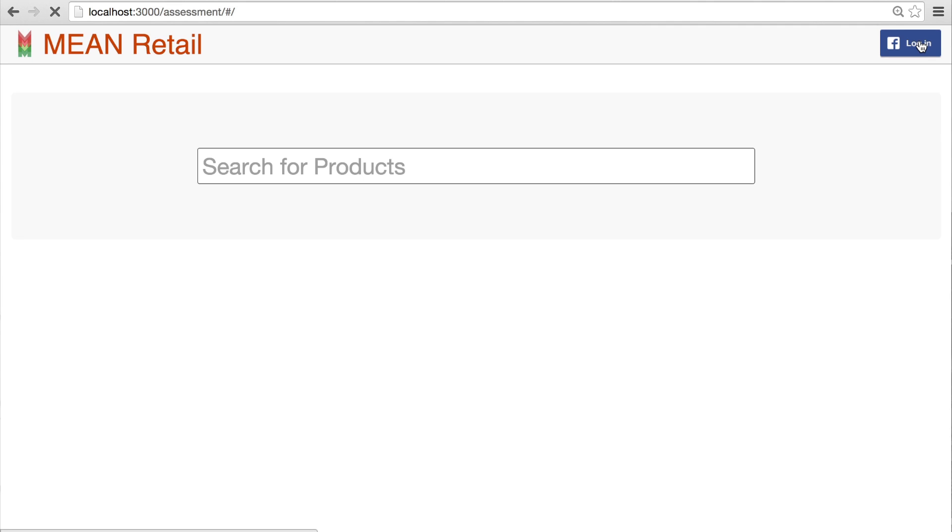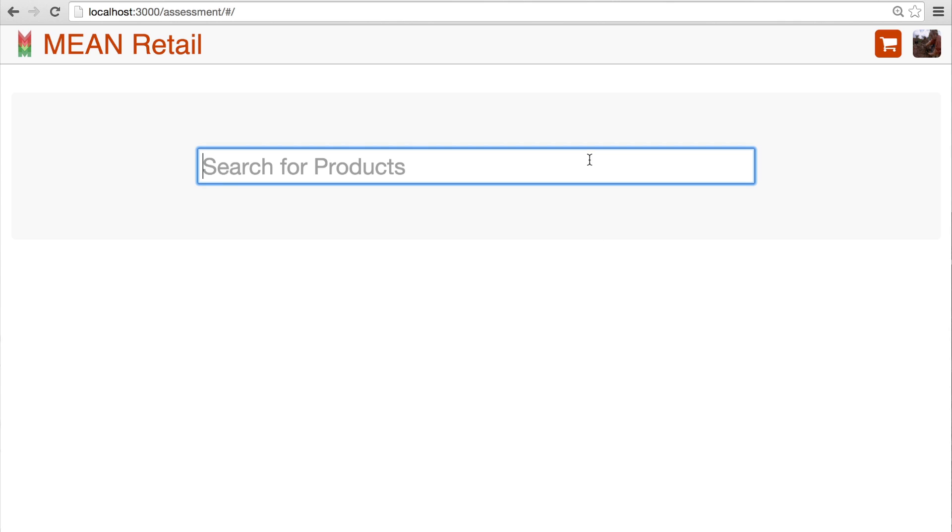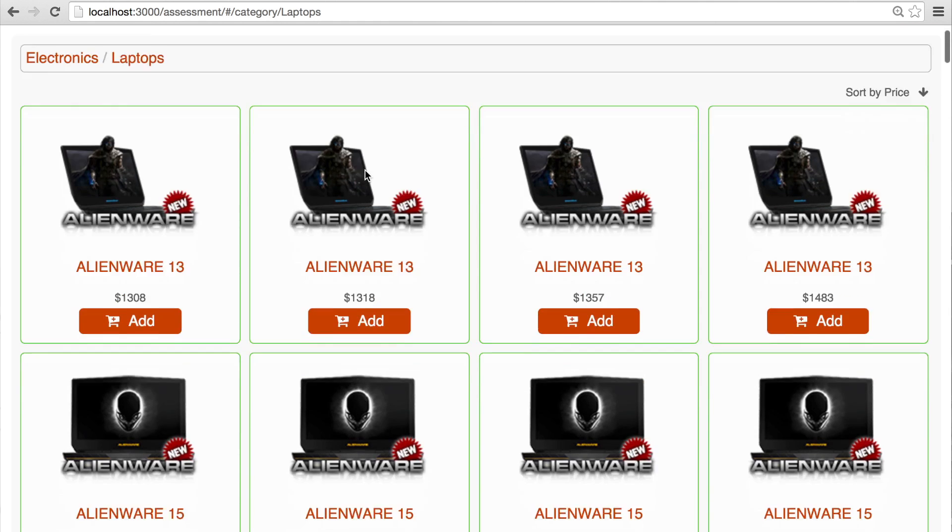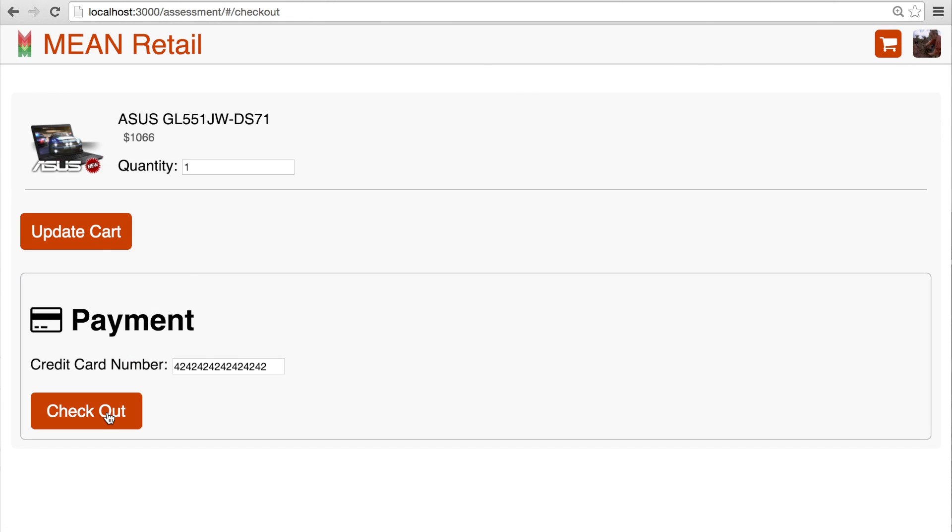The app will look something like this. As a new user, you'll be able to log in with Facebook, then you'll be able to search for an Asus laptop, you'll be able to add the laptop to your cart, and then check out with a fake credit card.